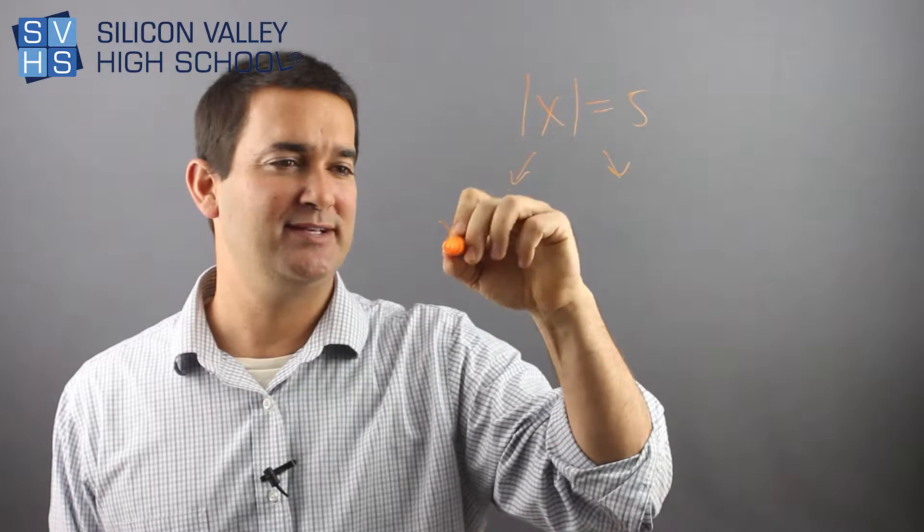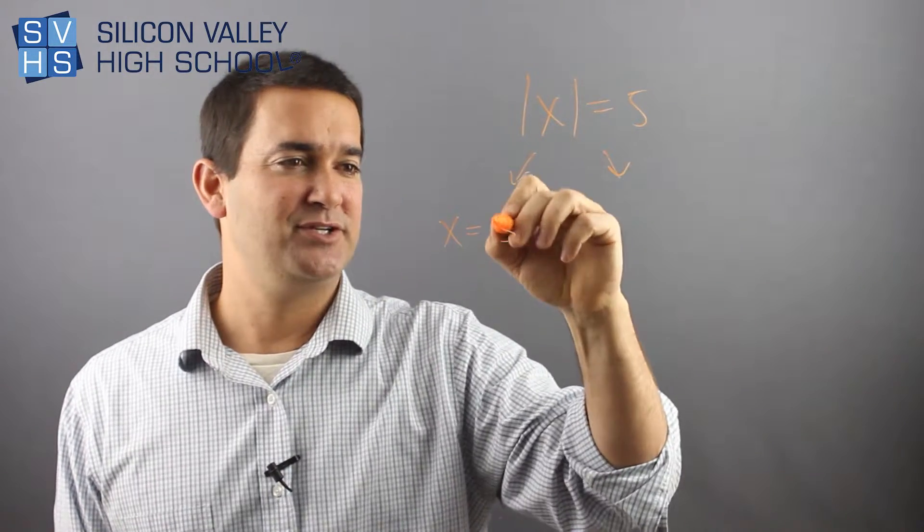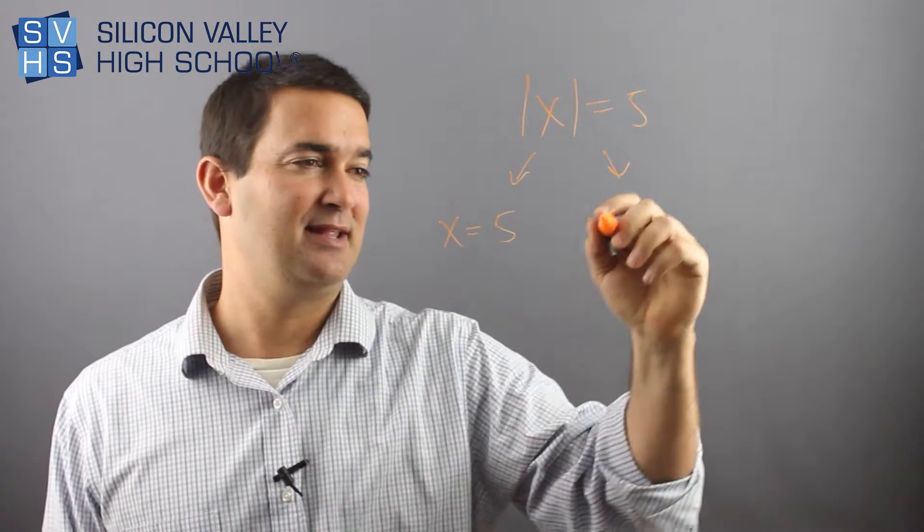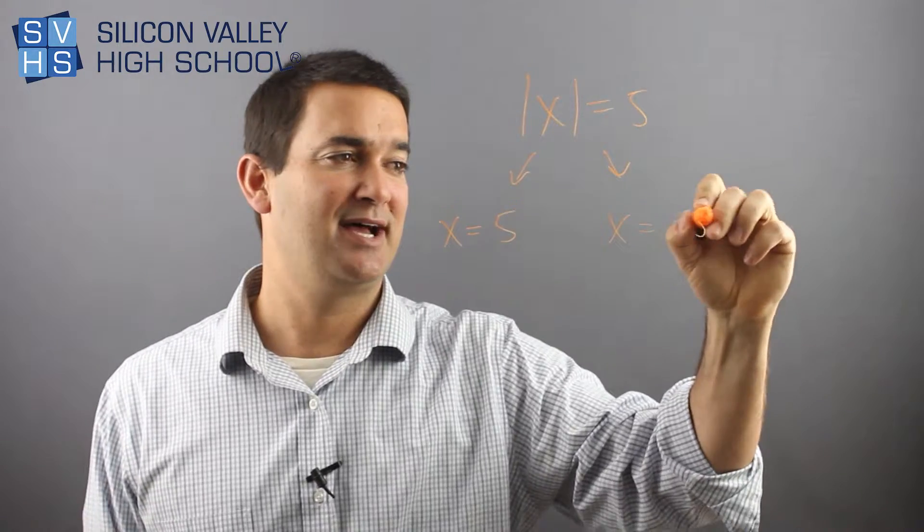But for this one, all you do is x equals the original equation minus the bars. And then the other one is, all you do is change the sign of the answer. Done.